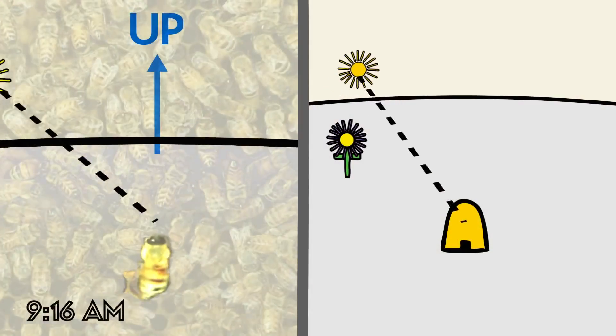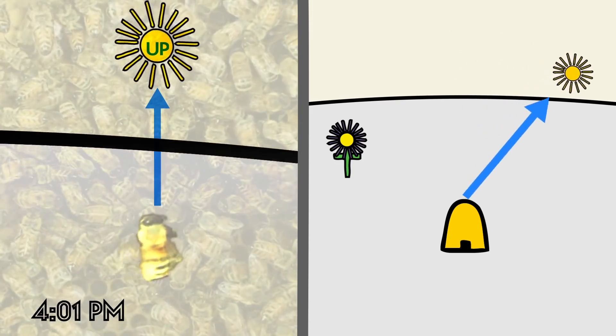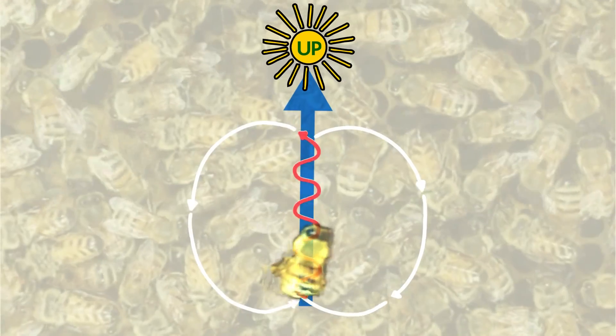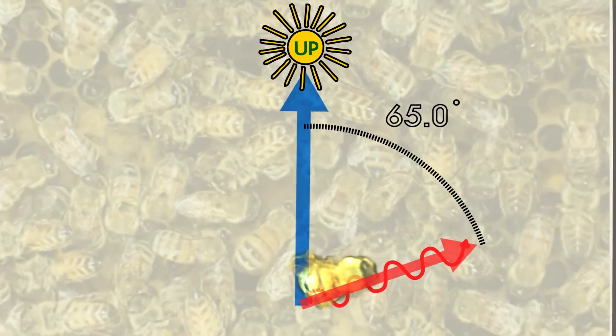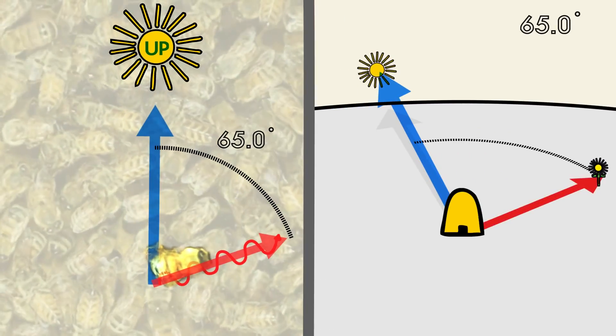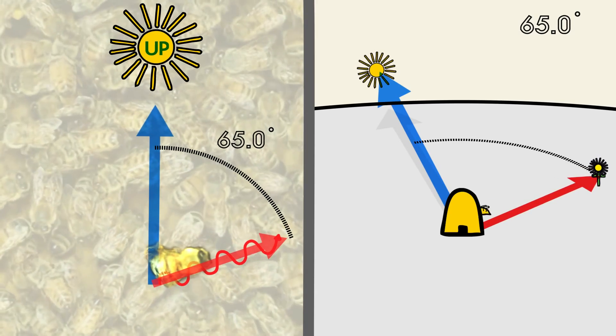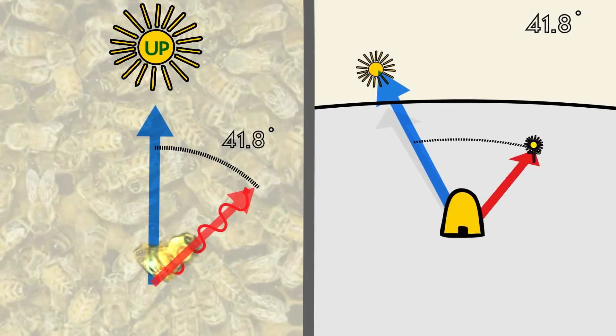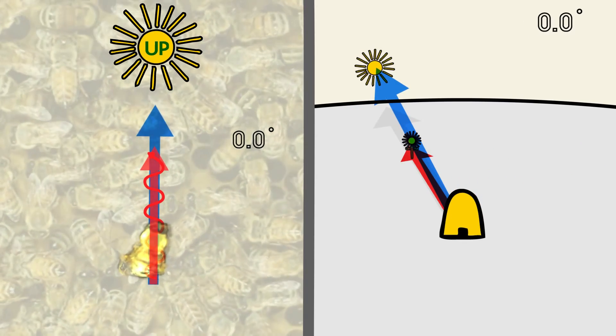Within the hive, the direction up, away from gravity, substitutes for the location of the sun. Then the angle that the bee dances compared to this up direction is the same angle a bee should fly away from the sun in order to find the target flower. So if the bee dances directly upward, other bees know that they can find flowers by flying directly towards the sun.